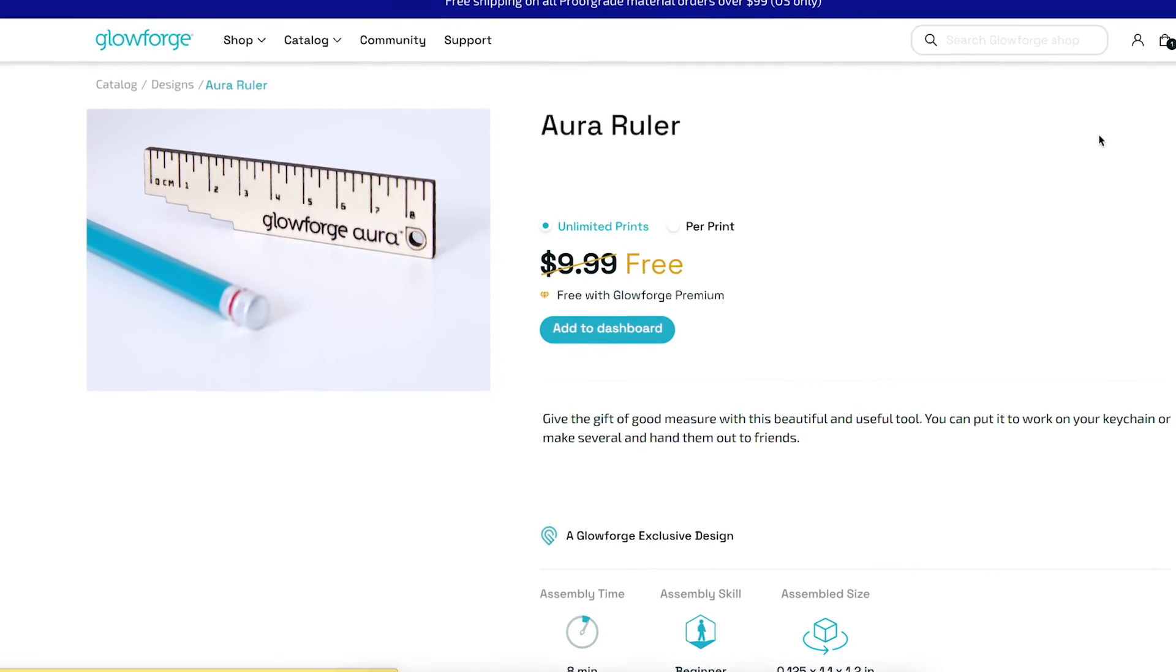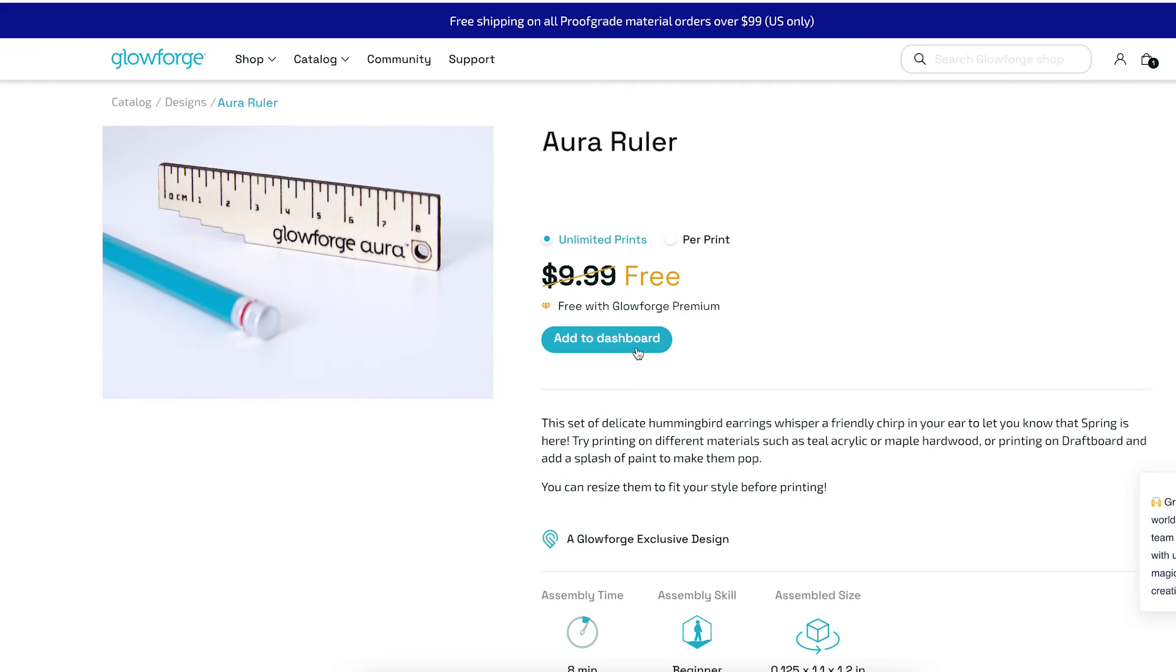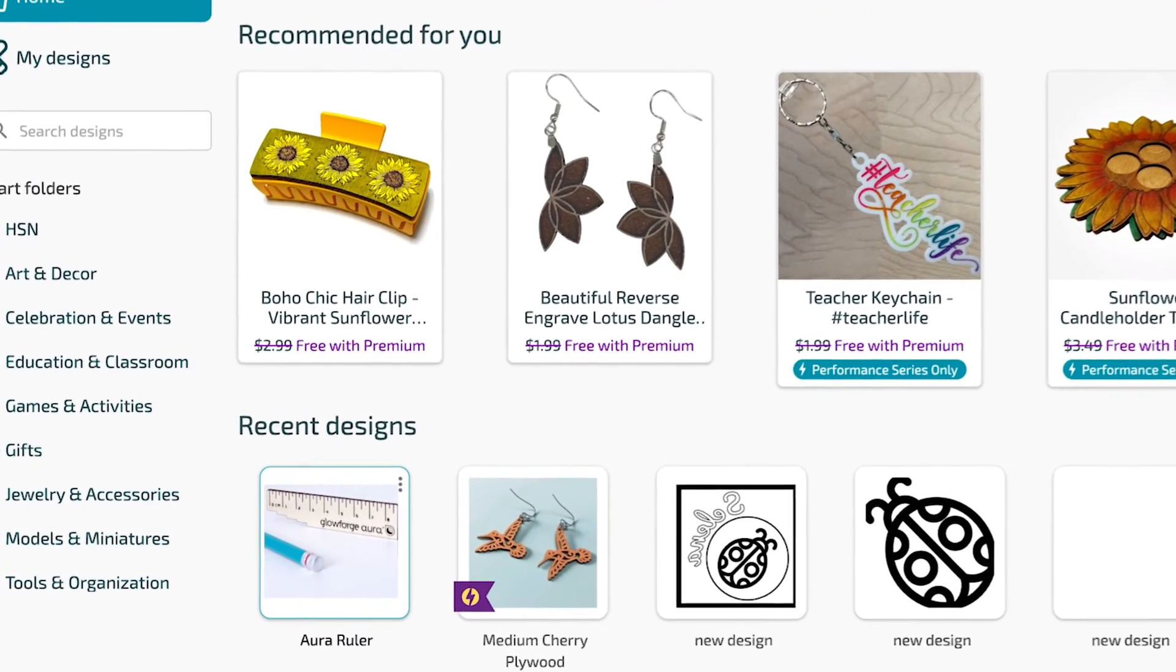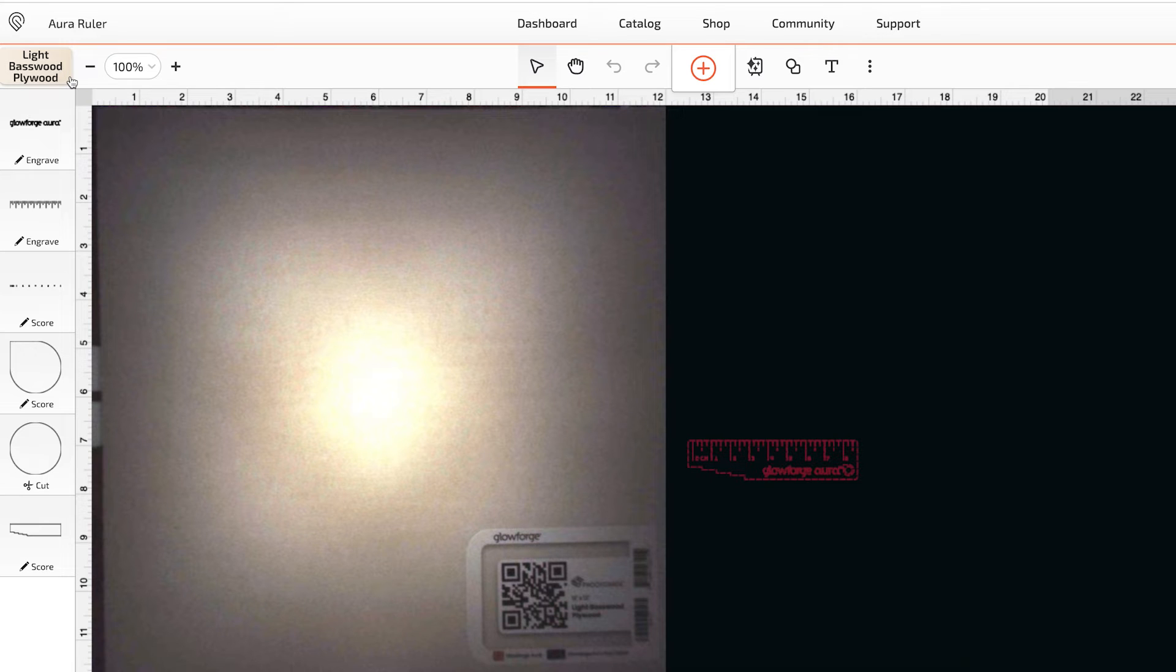You can see that all the designs include details about size, skill level, print and assembly times. Click Add to Dashboard. The Aura Ruler design we were just looking at is now first in your recent designs list. Click on it and it will open directly in the workspace where we can edit or print.